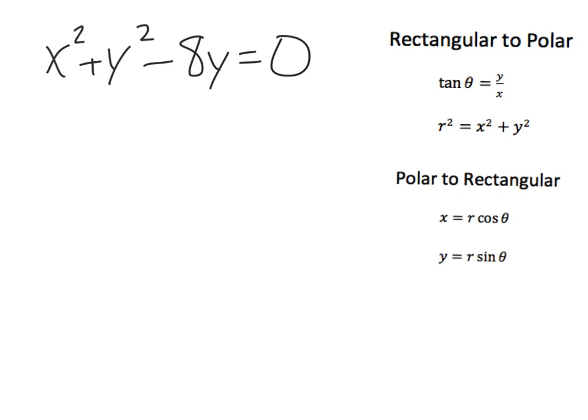So we've got our handy dandy little reminders over here as to what equals what. So what I notice here first is that this x squared plus y squared right here is equal to r squared, so I have r squared minus and then this is 8 times y, well our y value is r sine theta equals zero.